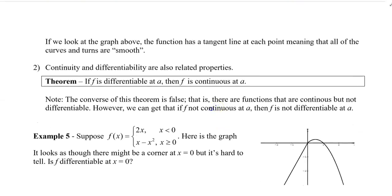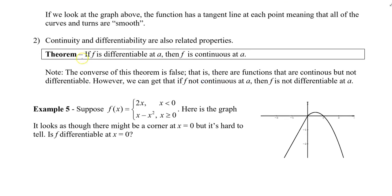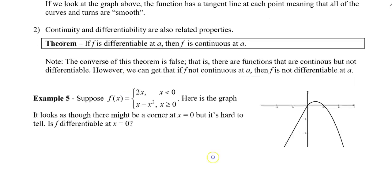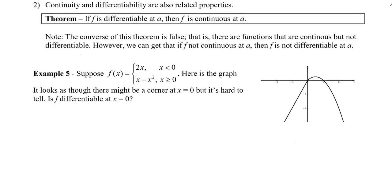Continuity and differentiability are related properties: if f is differentiable at a, then f is continuous at a. However, the converse of this theorem is false — there are functions that are continuous but not differentiable. So if f is continuous at a, it doesn't necessarily mean f is differentiable there. We're going to look at a piecewise function example to see how this happens.